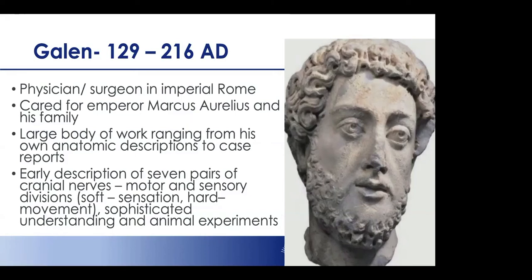Galen had a large body of anatomical work far more sophisticated than ancient Greece. He described seven pairs of cranial nerves with motor and sensory divisions. He was famous for a demonstration in the town square where he tied up a pig, performed neck surgery, identified the vagus and recurrent laryngeal nerve, tied them off, and proved the nerve was responsible for the pig's squealing — reversible by tightening and loosening sutures around the nerves.